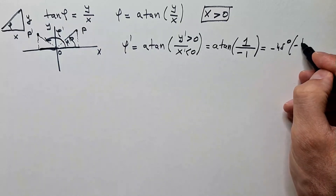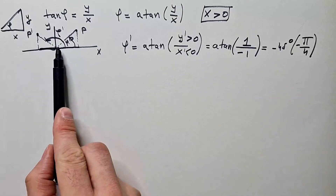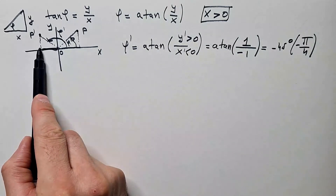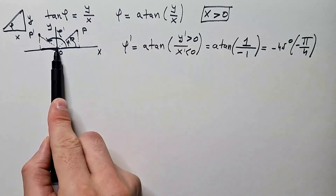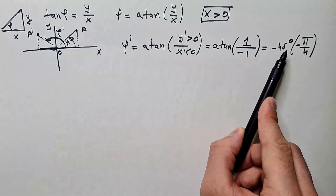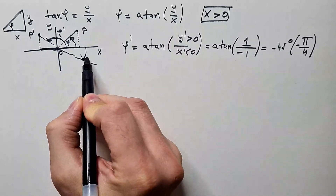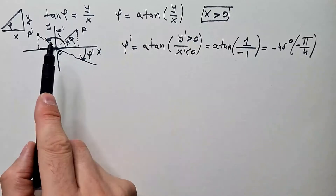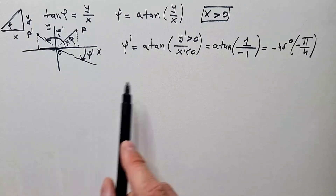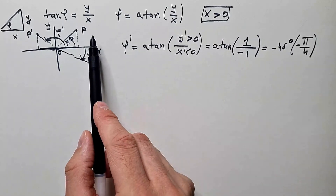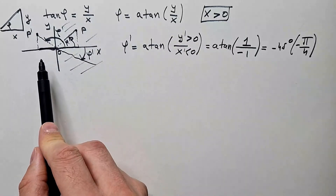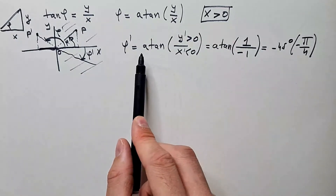But what would minus 45 degrees look like here? In mathematics, positive angles are counterclockwise and negative angles are clockwise. So if we measure the angle from the positive x-axis, then minus 45 degrees would be this angle — a reflection on the other side, which is not what we want. You can plug in any numbers and you will always get angles in the first or fourth quadrant. You will never reach the second or third quadrant using only the arctangent function.